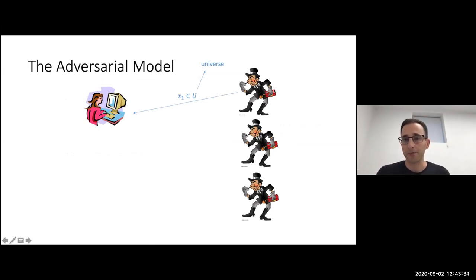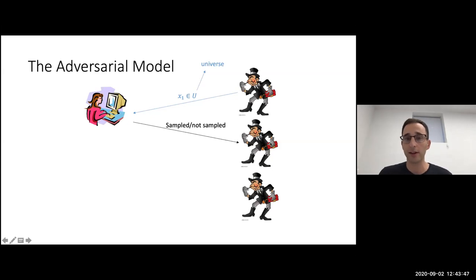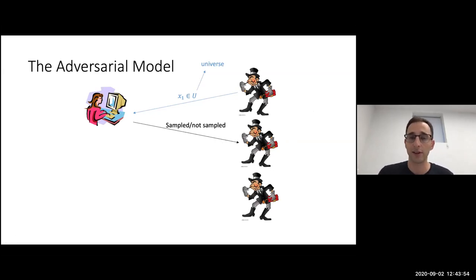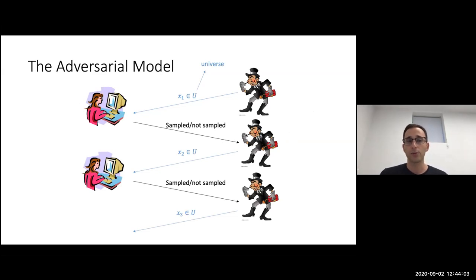We have the adversary, who chooses some element x_1. Our streaming algorithm is just a sampling algorithm — it samples x_1 with probability p, and then notifies the adversary if this element was sampled or not. The adversary gets this information and adaptively chooses the next element x_2. Again, we notify the adversary if it was sampled or not, and we continue this way. This is the adversarial model of sampling.